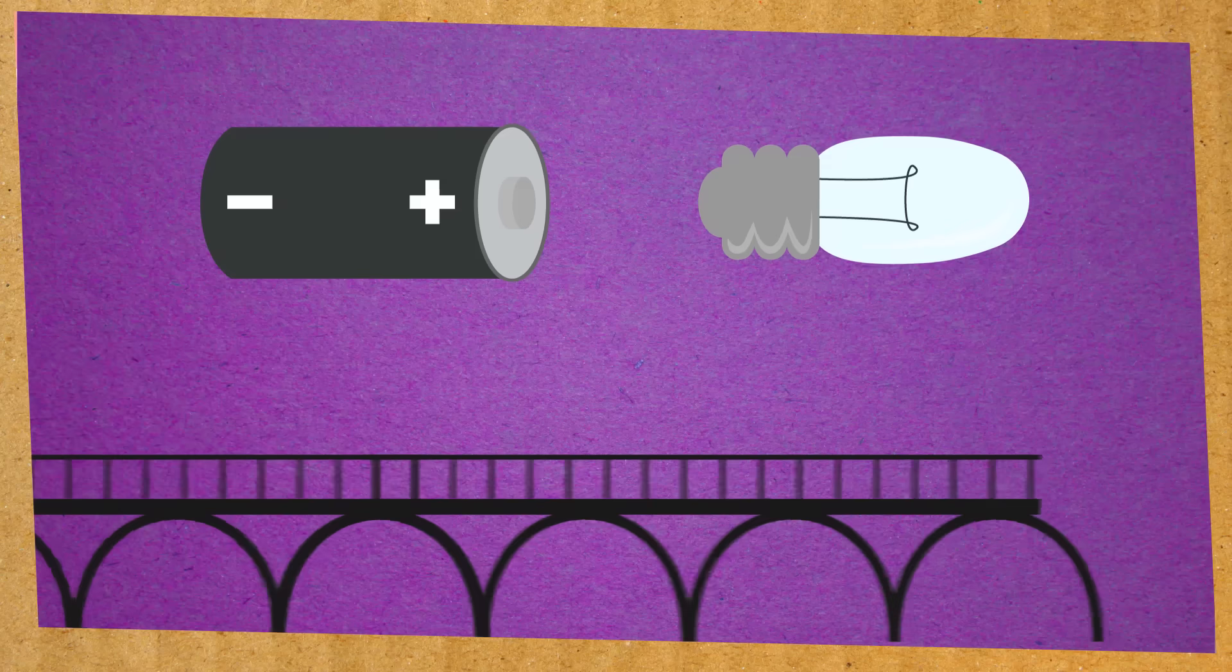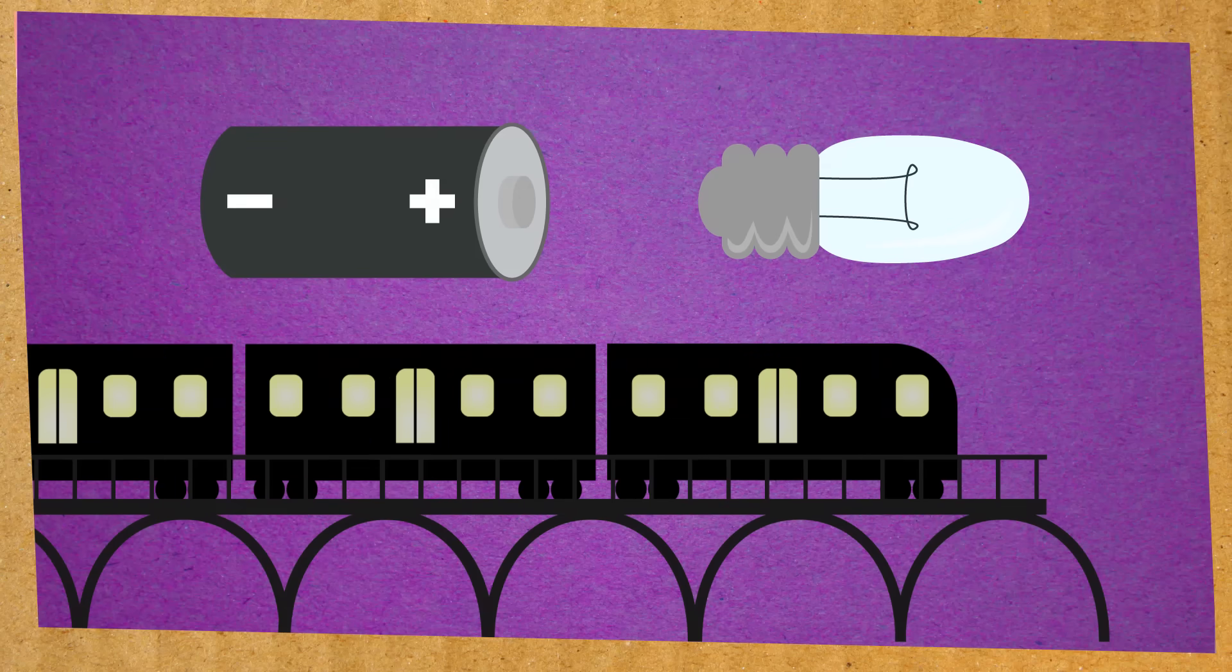It's a little like a train on train tracks. When there's no more track, the train stops. So let's see how a simple circuit works.